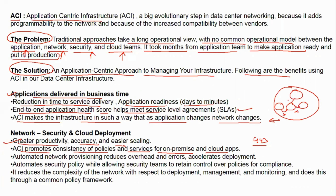The traditional method for intra-segment isolation is VACLs — MAC access lists — but the more access lists you configure, the more TCAM utilization you have. With ACI's micro-segmentation, you can achieve the same result without excessive TCAM usage. Even within a segment, if you don't want workloads talking to each other, you simply express your desire and nothing else is needed.